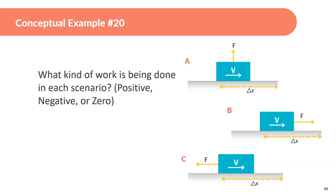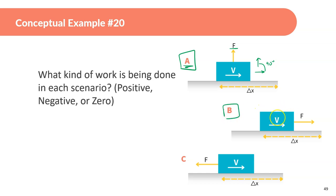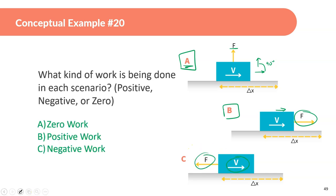Let's look at what kind of work is being done in each scenario. Scenario A: the object is moving to the right but being pushed up — perpendicular, 90-degree angle — so zero work is done. Scenario B: moving to the right and being pushed to the right, so positive work is done. Scenario C: moving to the right but pushed to the left, so negative work is done.